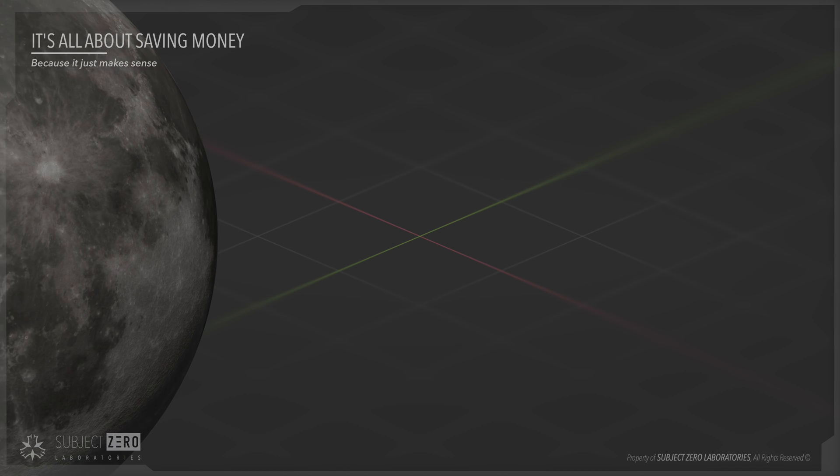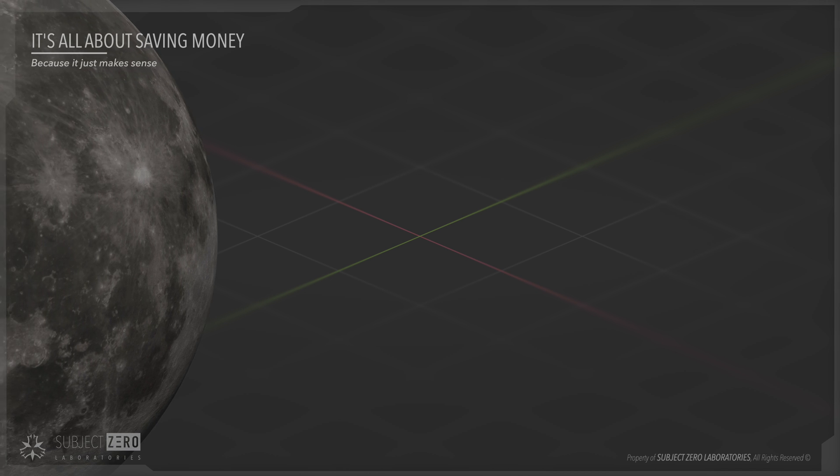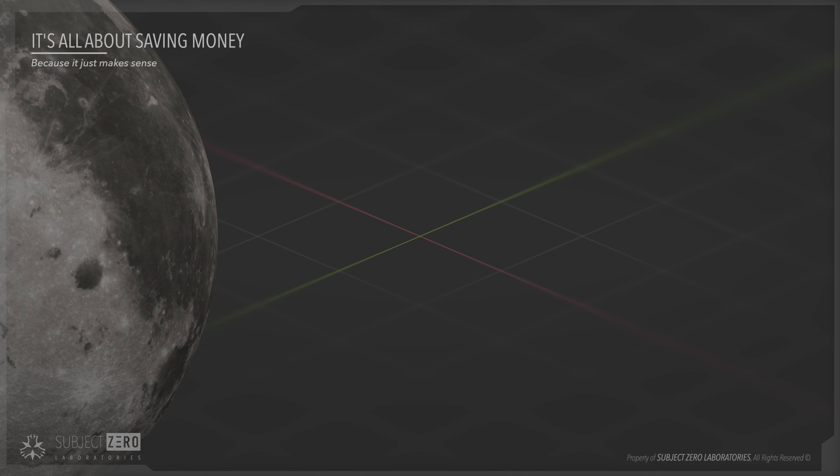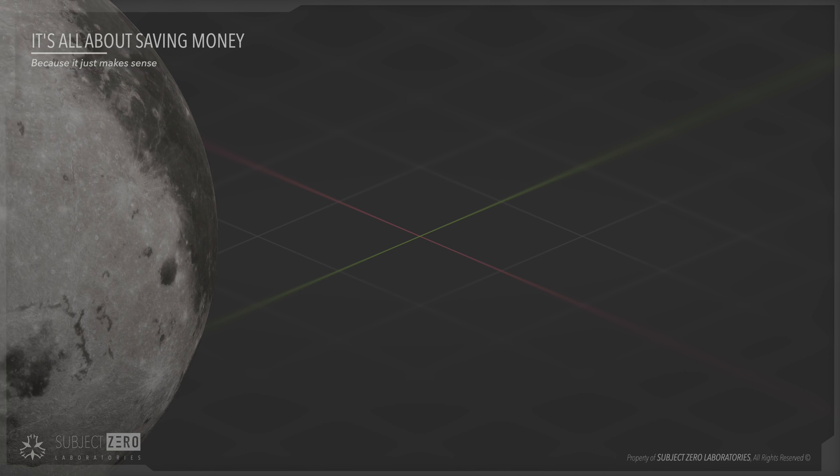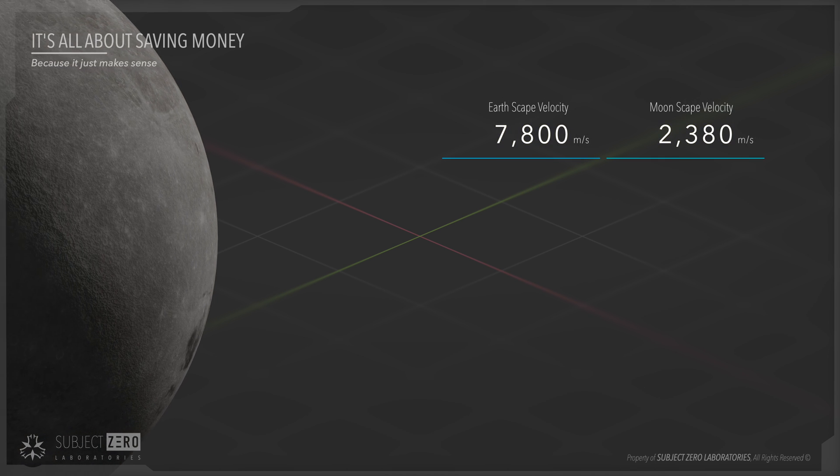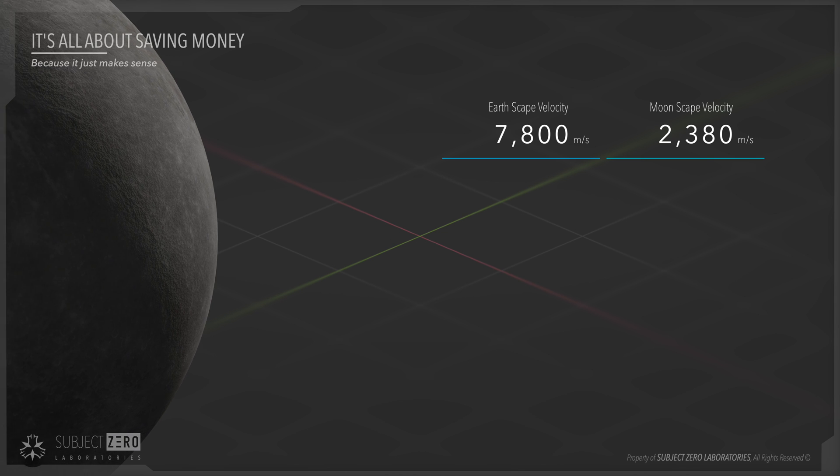which in turn would make its way to the moon and land itself on a refueling station. Because the moon's gravity is much lower in comparison to Earth, or about 16% of Earth, the escape velocity needed is only 30% of that, or 7,800 meters per second to 2,380 meters per second.